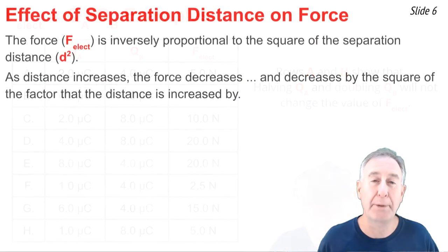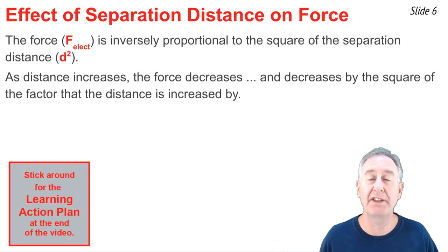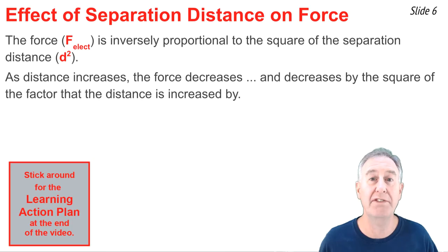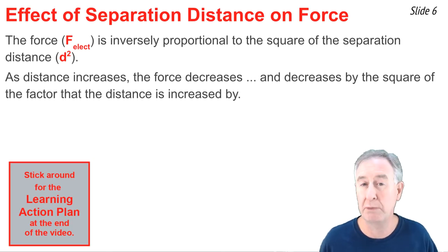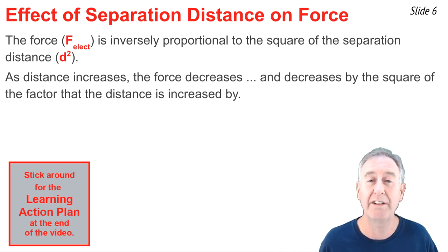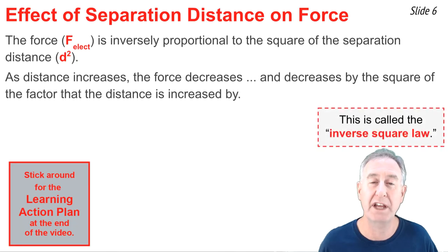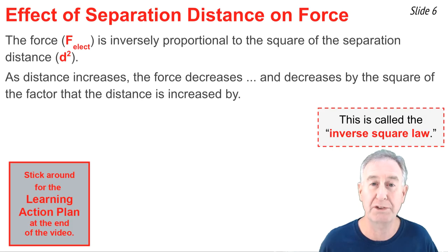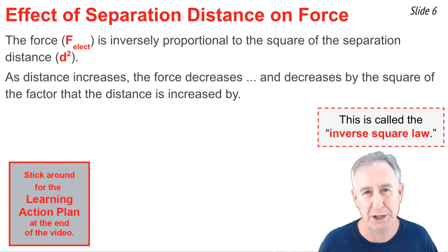The second part of Coulomb's Law states that the electric force is inversely proportional to the square of the separation distance. That is to say that if the distance were increased, the electric force would be decreased, and decreased by a factor that is the square of the factor by which D is changed. We sometimes refer to this as the inverse square law, because F is inversely proportional to the square of the separation distance.